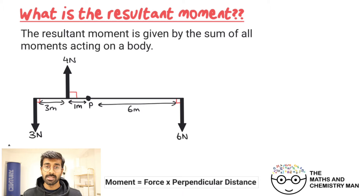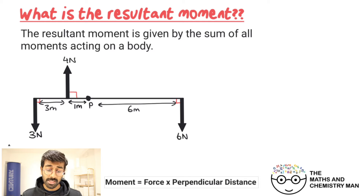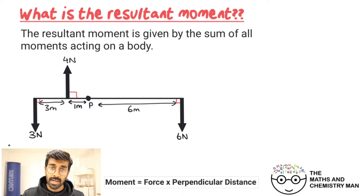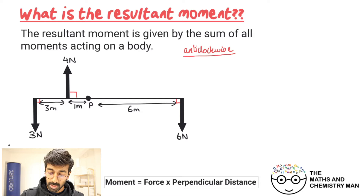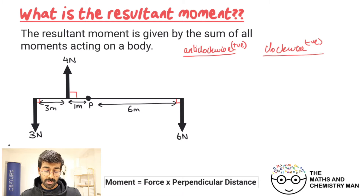At the end of last video I mentioned we'll be looking at more complicated examples — maybe more than two forces acting, or forces at angles. The principles stay exactly the same. We've got a few forces here acting at a pivot point, and what we need to do is calculate the anti-clockwise moments and the clockwise moments.